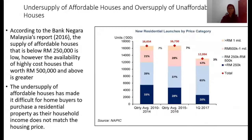The graph illustrates the under-supply of affordable houses and the over-supply of unaffordable houses. The supply of affordable houses priced below RM250,000 is low. However, the availability of high-cost houses worth RM500,000 and above is greater. The under-supply of affordable houses has made it difficult for home buyers to purchase residential property, because the household income does not match the housing price.